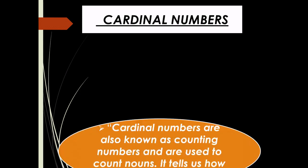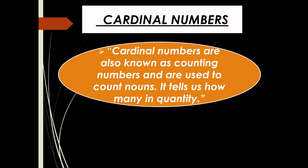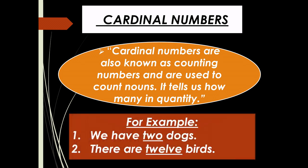Cardinal numbers are also known as counting numbers. They are used to count nouns and tell us how many — the quantity. Cardinal numbers are used with both singular and plural nouns. For example, 'We have two dogs' — here 'dog' is the noun and '2' is the cardinal number, showing the quantity of the noun.